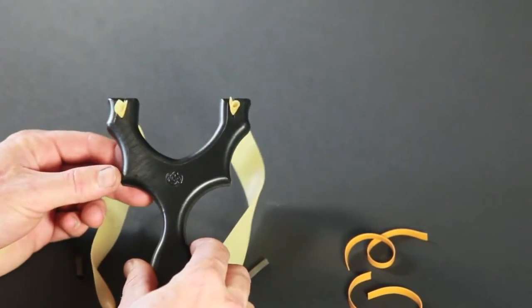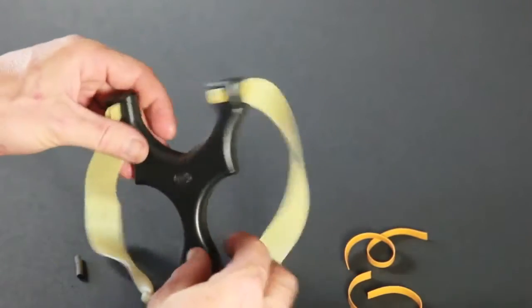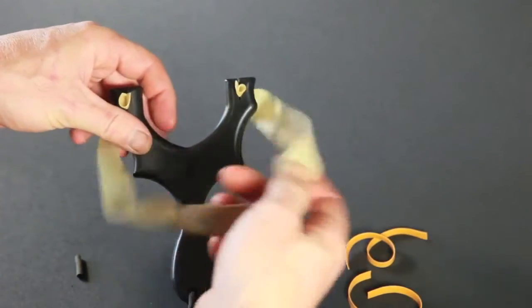Another popular way to band the Peerless slingshot using the slot method is to simply take the bands, roll them over, and attach them into the slots.